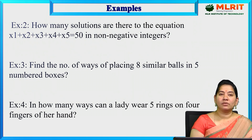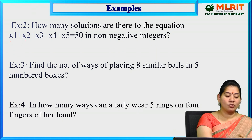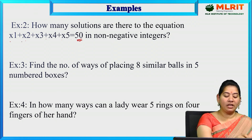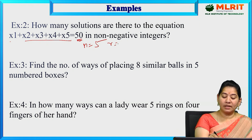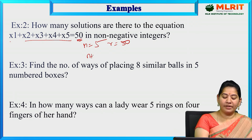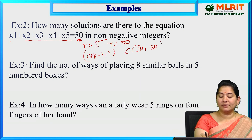The next question: how many solutions are there to the equation x₁ + x₂ + x₃ + x₄ + x₅ = 50 in non-negative integers? Here n is equal to 5 and r is equal to 50. Applying the formula C(n+r-1, r): C(50+5-1, 50) = C(54, 50) = 54C50 is the answer.